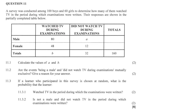Question 11. A survey was conducted among 100 boys and 60 girls to determine how many of them watched TV in the period during which examinations were written. Their responses are shown in the partially completed table below. These are the individuals that watched TV during exams and then did not watch TV, male and female. So there were 160 of them in total. Question 11.1.